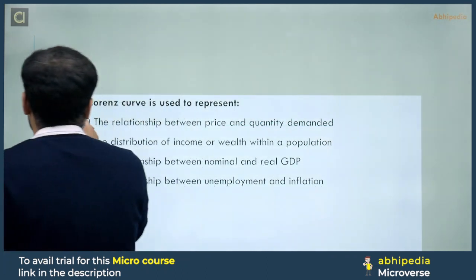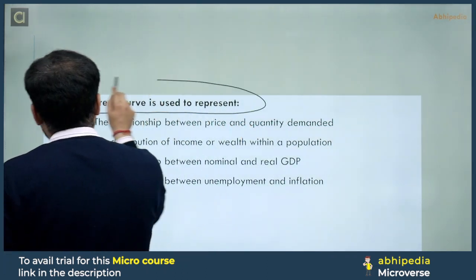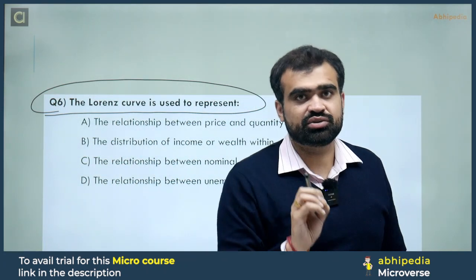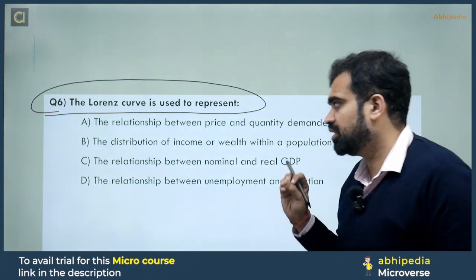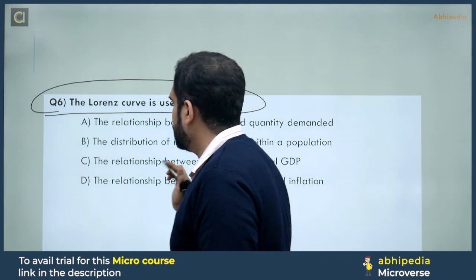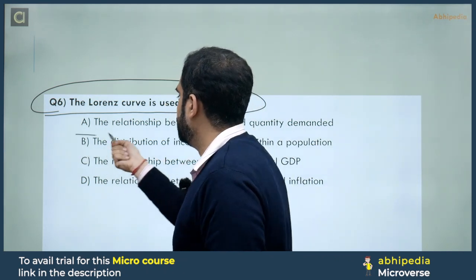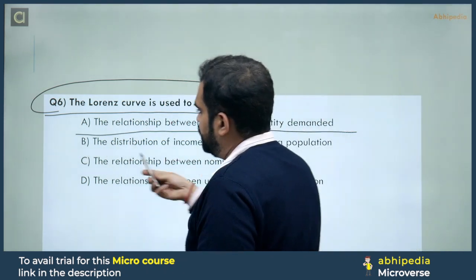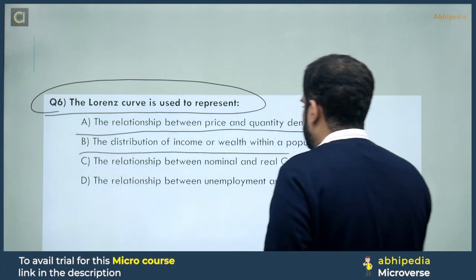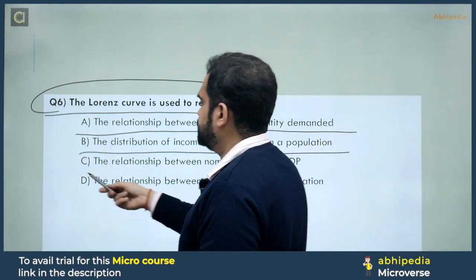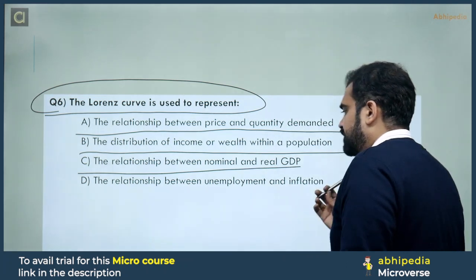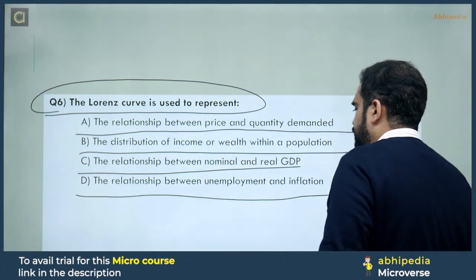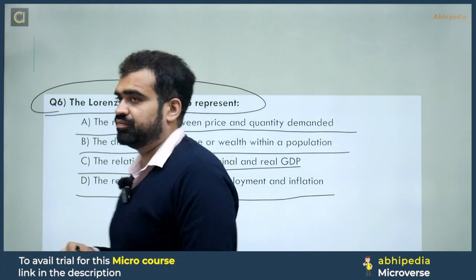Next question: the Lorenz curve is used to represent what? This is a previous year question. Options: A) The relationship between price and quantity demanded, B) The distribution of income or wealth within a population, C) The relationship between nominal and real GDP, D) The relationship between unemployment and inflation.